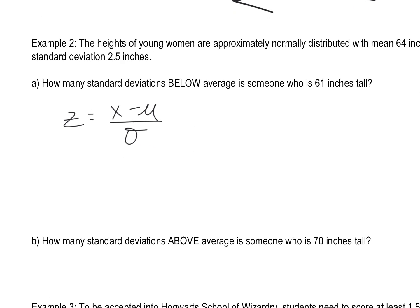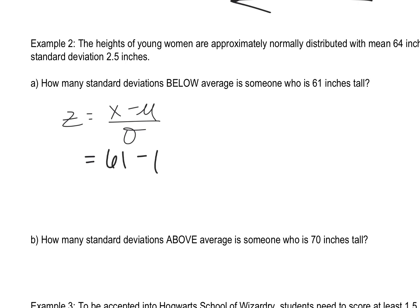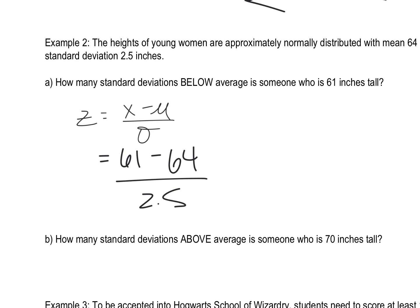The X value is 61. The mean is 64. Divide by 2.5. That gives us negative 3 over 2.5, which is negative 1.2.